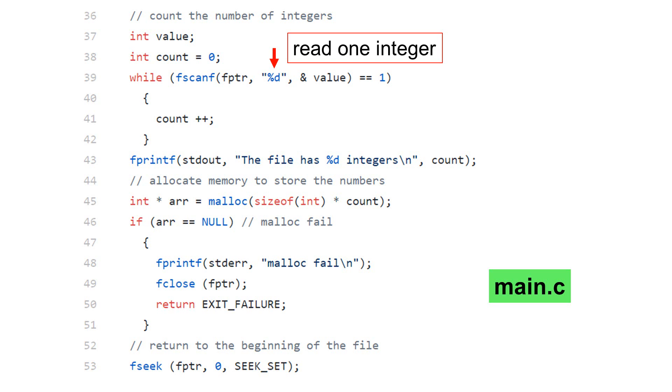In line 39, the program got out of the while loop because the program reaches the end of the file. After the memory has been allocated, we need to go back to the beginning of the file, read the content of the file, and store the integers in the array.